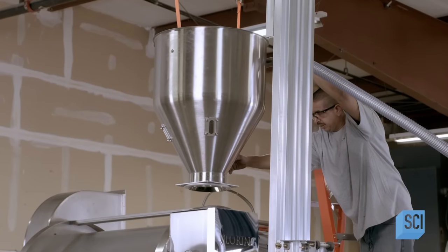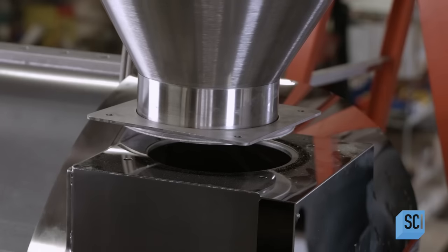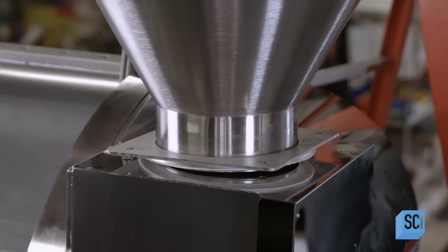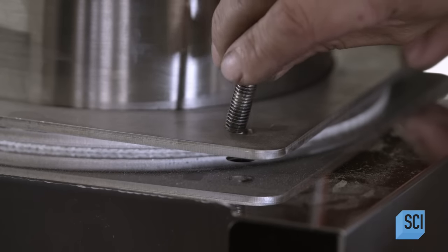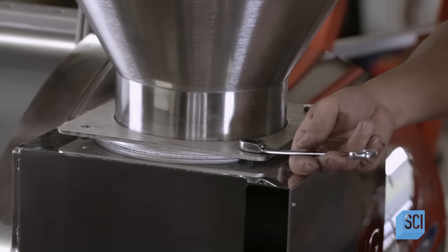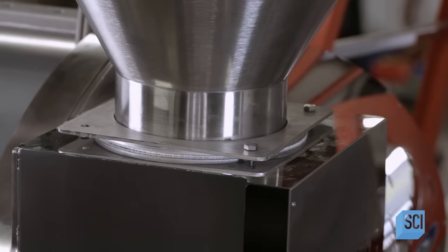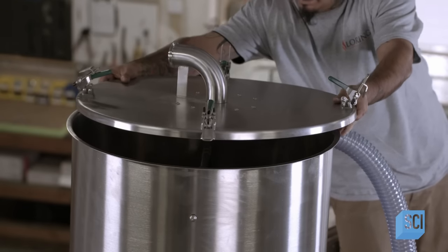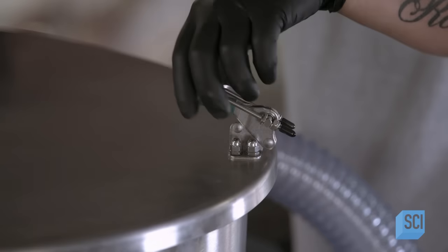On top, the assembly team mounts the machine's funnel-shaped hopper. The hopper feeds the unroasted coffee beans to the roast chamber below. The hopper's lid has a tube which connects to a vacuum system that draws the coffee beans up through a plastic hose.